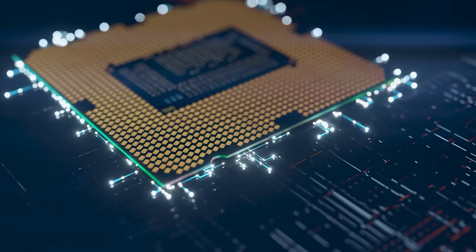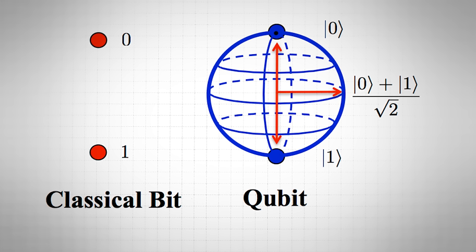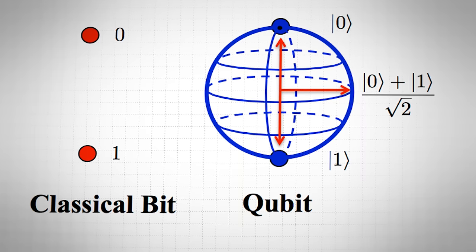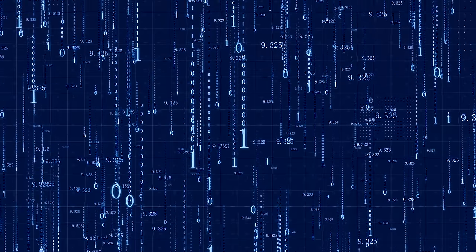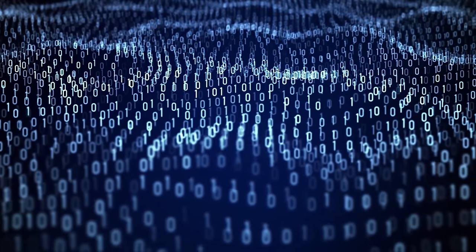Whereas regular computers ultimately consist of bits of 1s and 0s, quantum computers consist of qubits — bits of information that can be a 1 and a 0 at the same time. Obviously this is even more difficult to wrap your head around, and exactly how this is done is outside the scope of this video. That said, the easiest way to understand qubits is to compare them to bits. Suppose you have two bits, a 1 and a 0 — what you have is two bits of information in total. However, if you have two qubits, you have four bits of information in total.